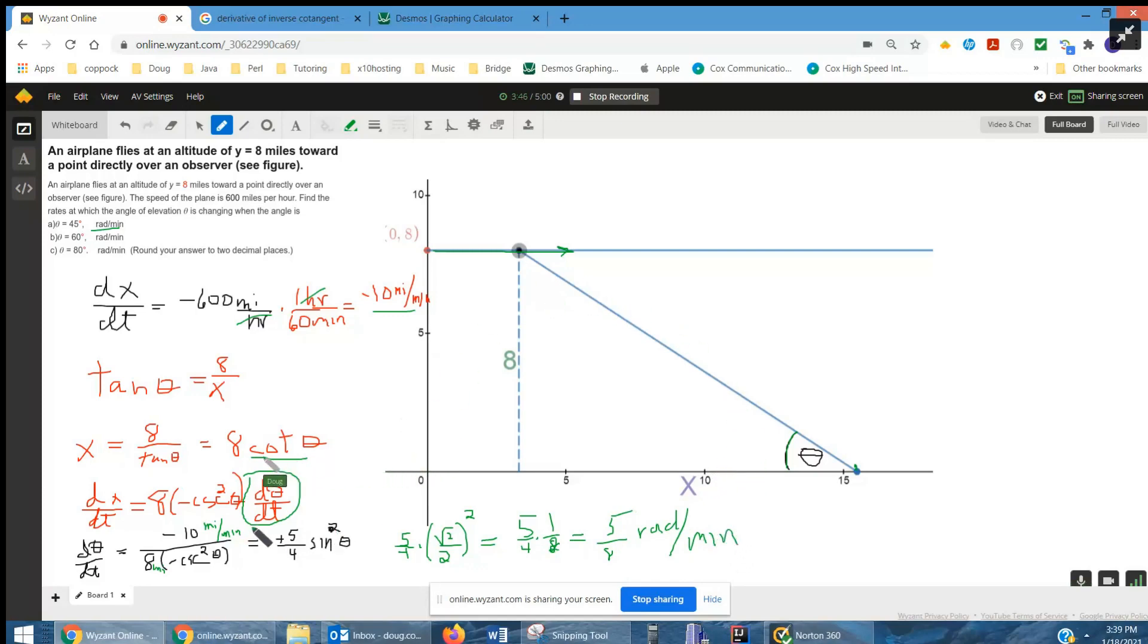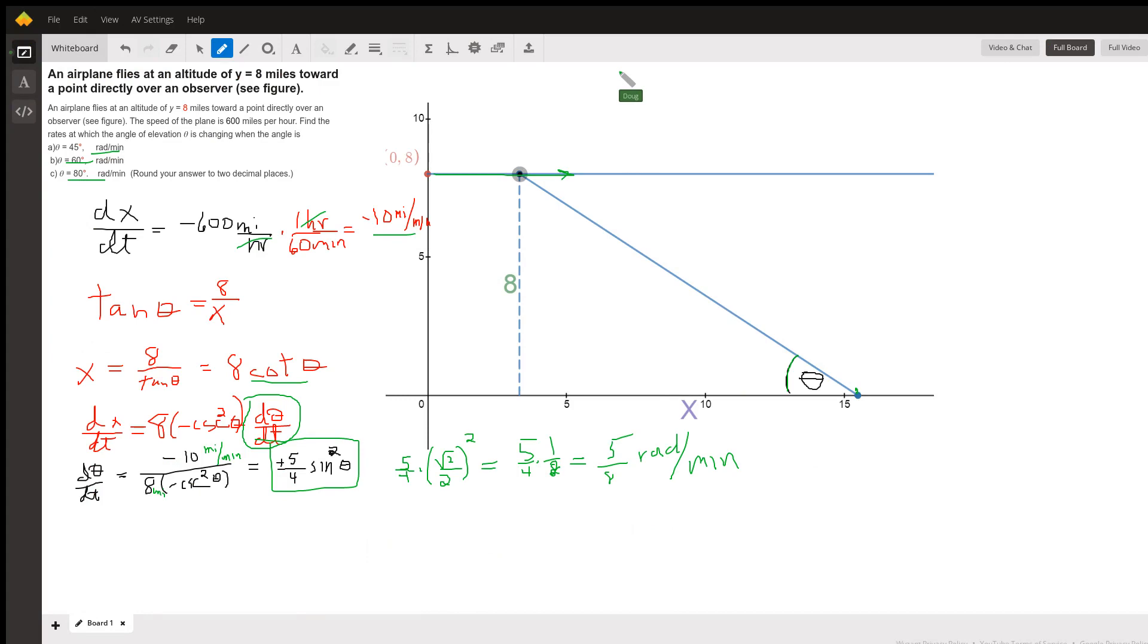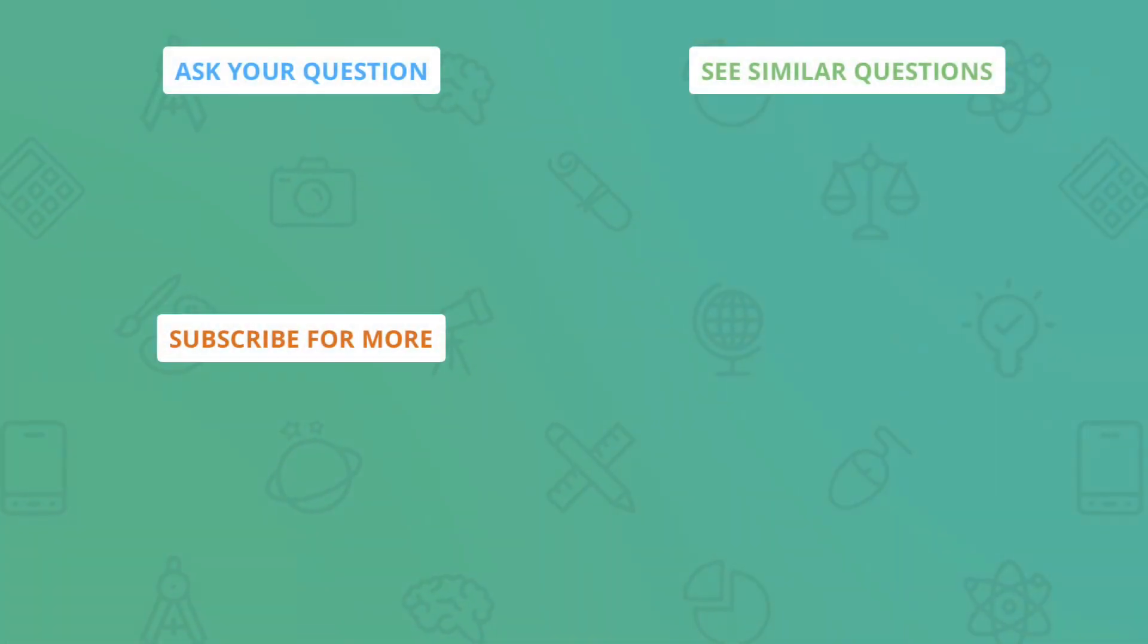And then you can do the same thing right here, substitute in these other values, 60 degrees, 80 degrees. You'll have to use a calculator for the 80 degrees. For 60 degrees, you can just substitute for the sine of 60 is probably radical 3 over 2 squared is 3 fourths. But there you go. Hope that helped. If you have any questions, folks, leave a comment. Have a great day.